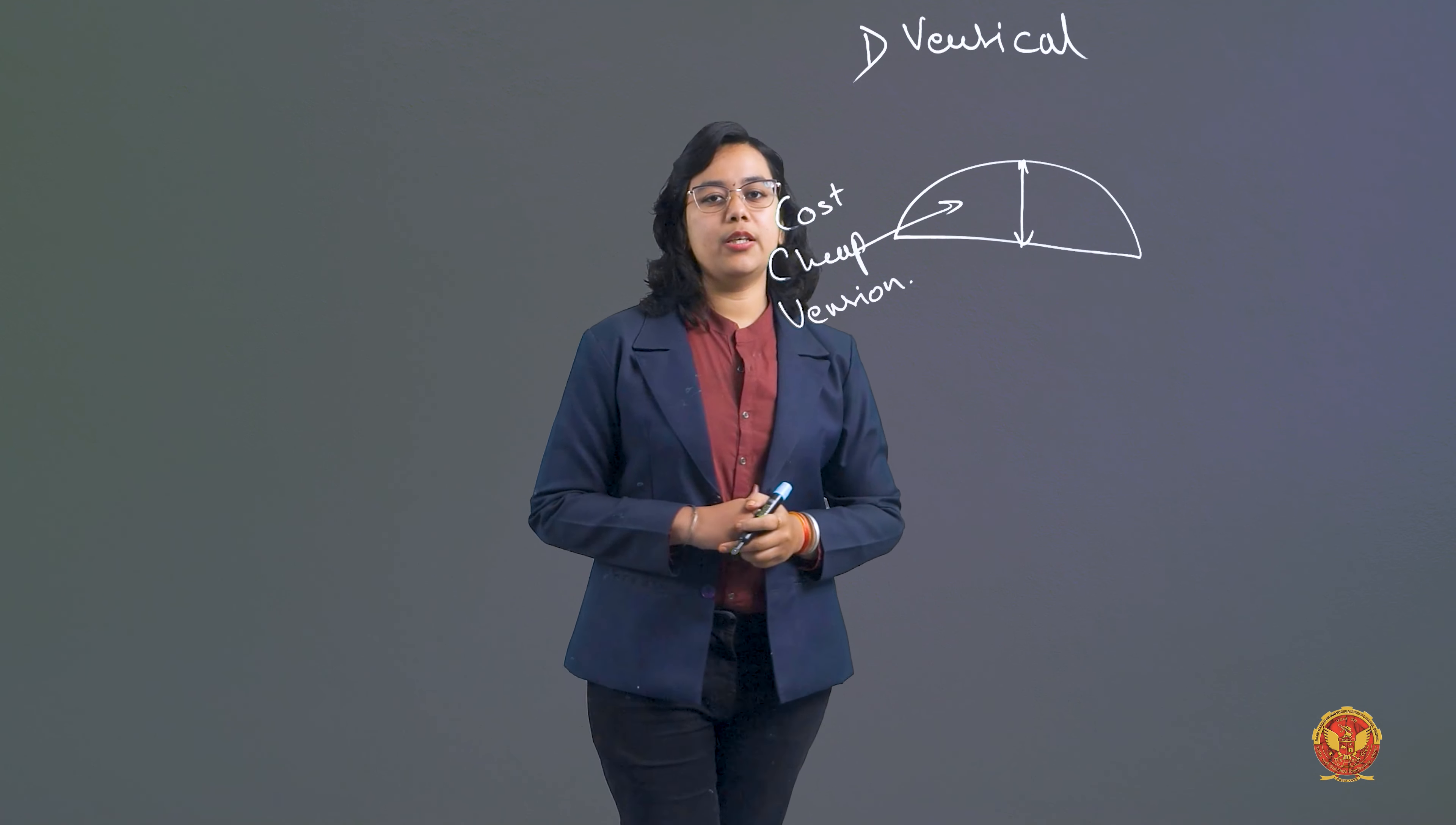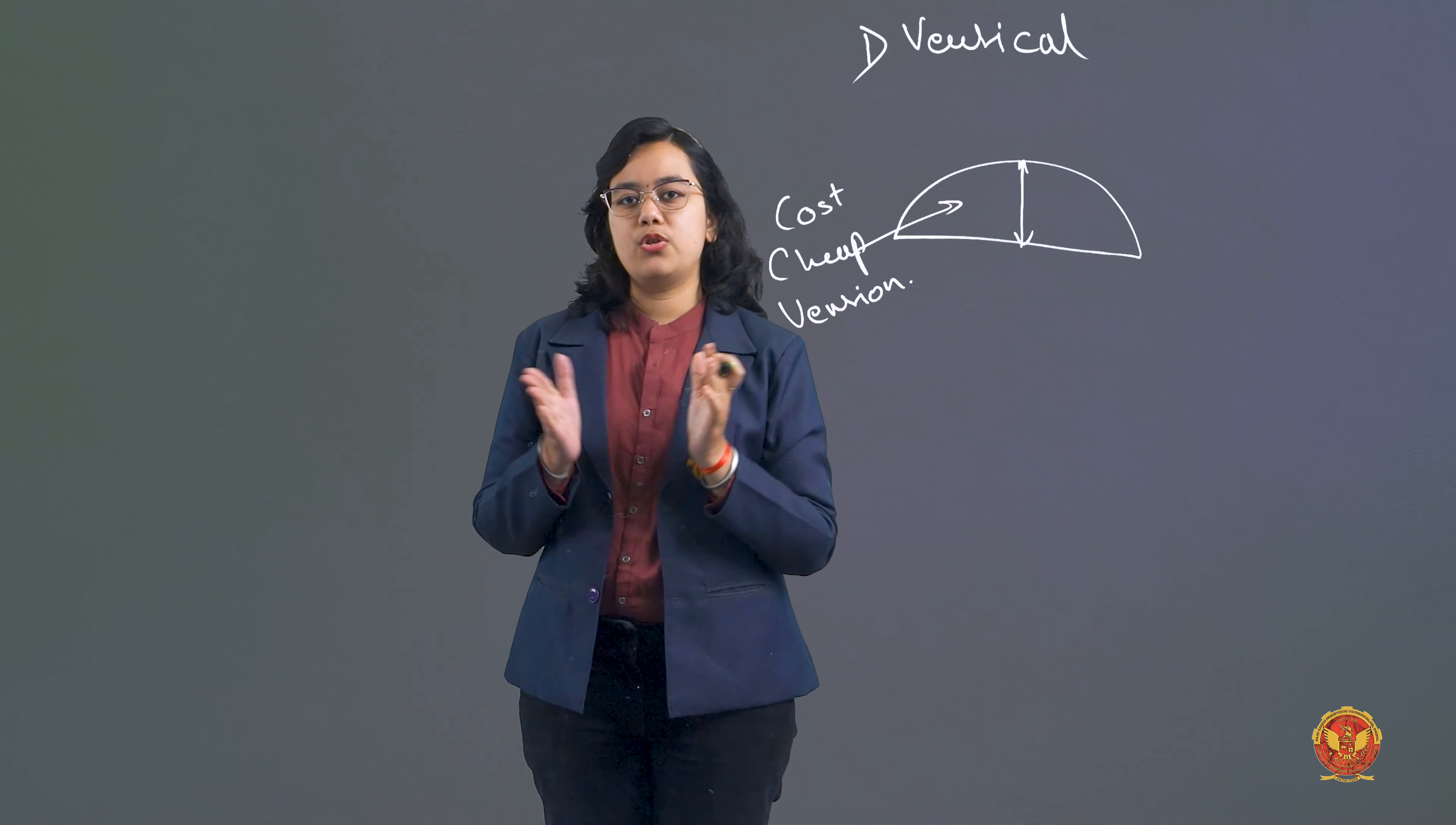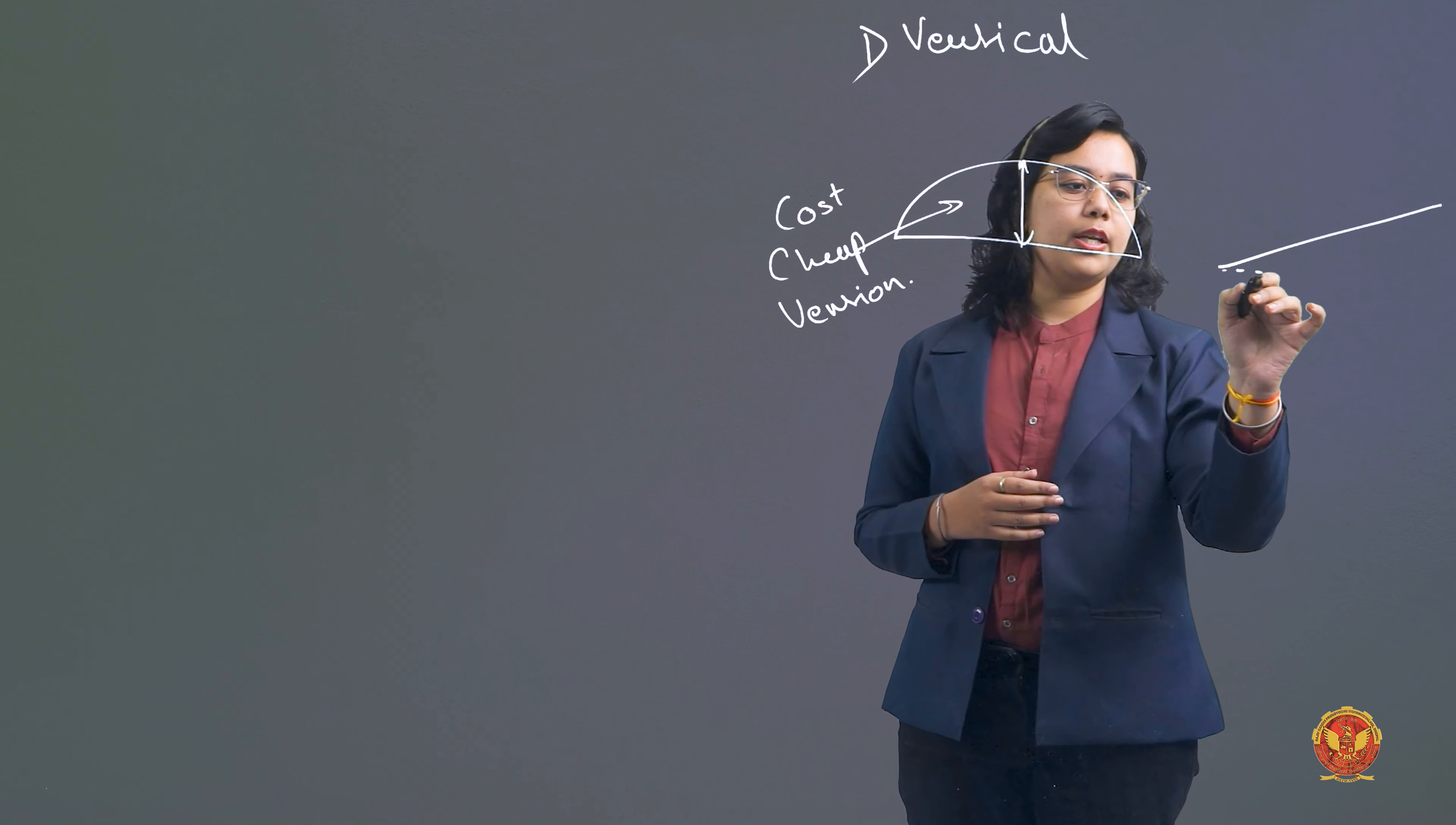Let's talk about the second shaft. If we have a tunnel, if the geometry is not horizontal, if there is not horizontal geometry, then how do you have to give the geometry? Inclined.